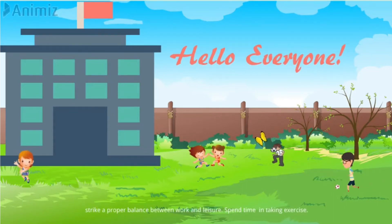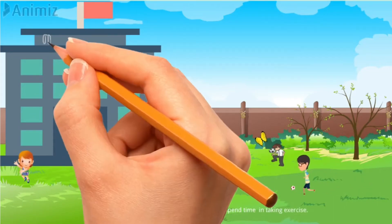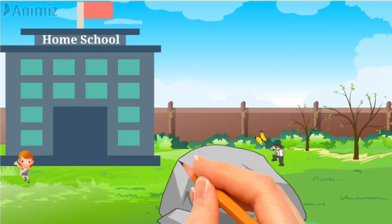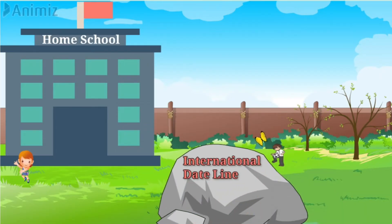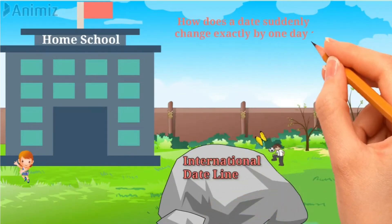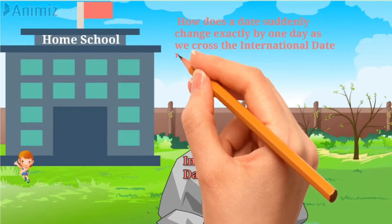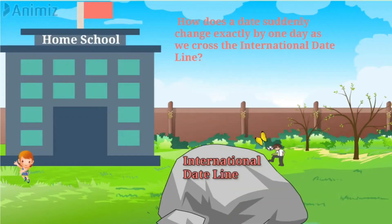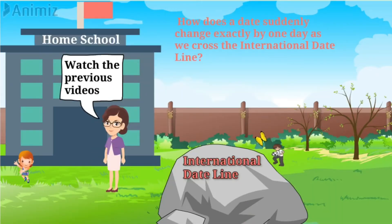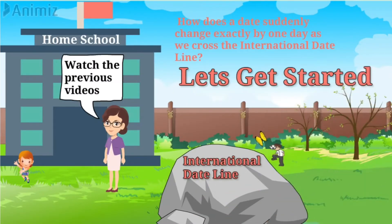Hello everyone, welcome back to our channel Home School. Today we are going to learn about the international date line. This video will help you know how the date changes exactly by one day as we cross the international date line. I suggest you watch our previous videos, as they are linked with this one — links are given below in the description. Now let's get started.